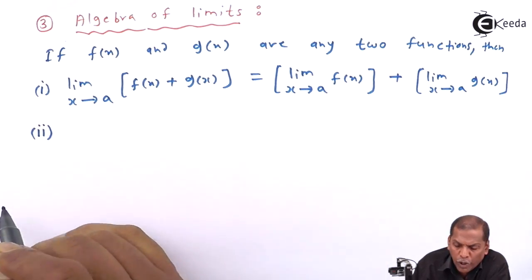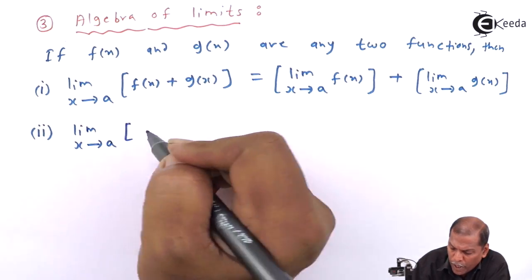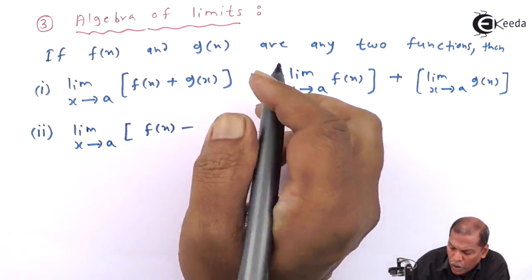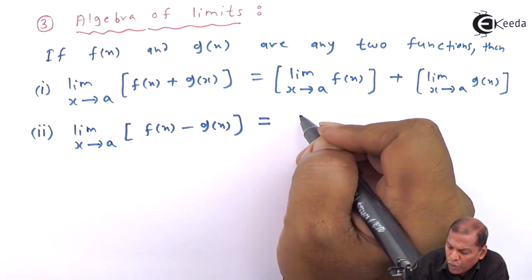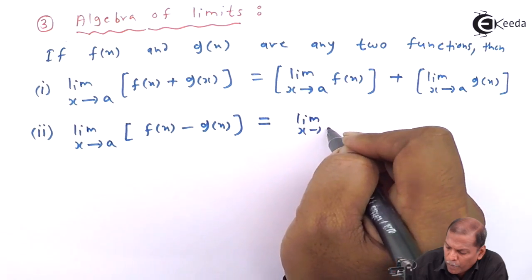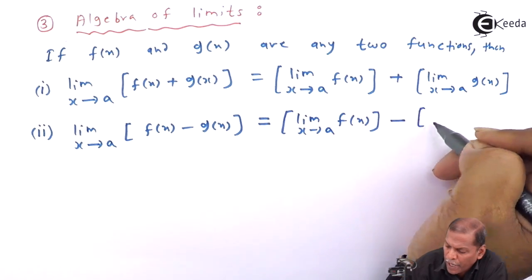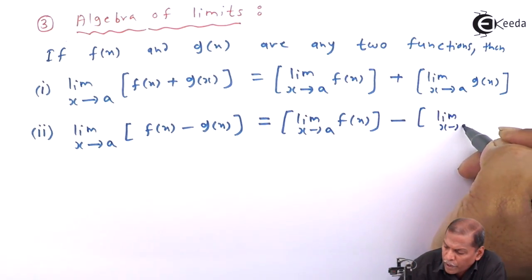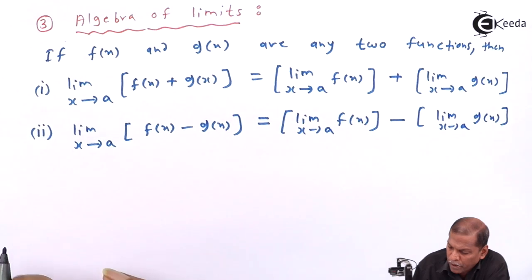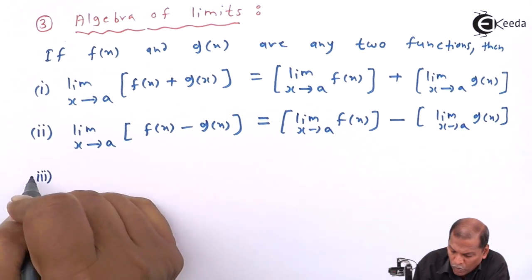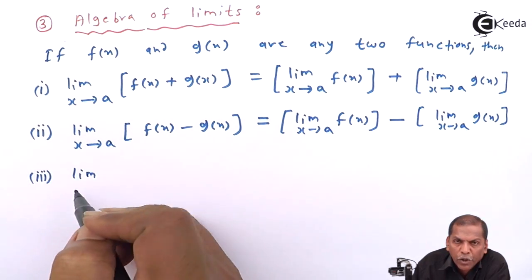Formula number two: limit x tends to a of [f(x) minus g(x)] is equal to limit x tends to a of f(x), minus limit x tends to a of g(x).